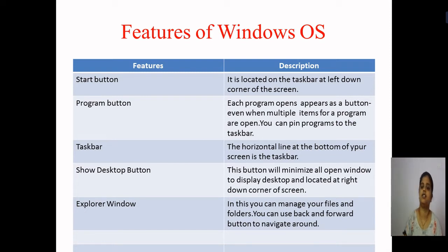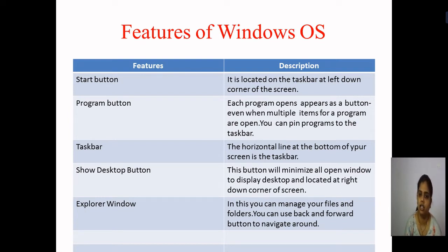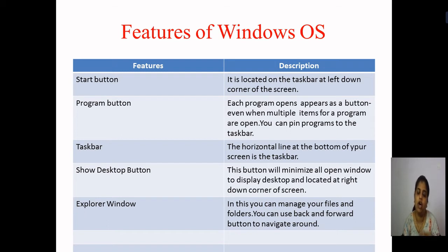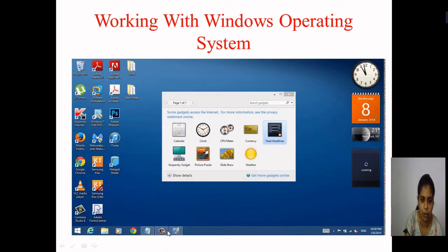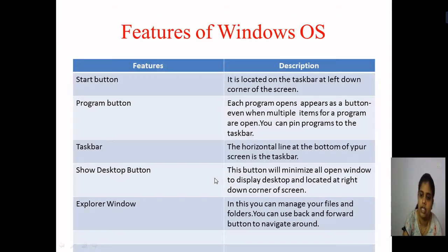The second feature is the Program button. The Program button is used when you open each program — it appears at the bottom even when multiple items for a program are open. You can pin a program to the taskbar. The program button helps the user to allocate or pin that program to your taskbar. Multiple programs can be open on your taskbar at a time — notepad, gadgets page, and others.